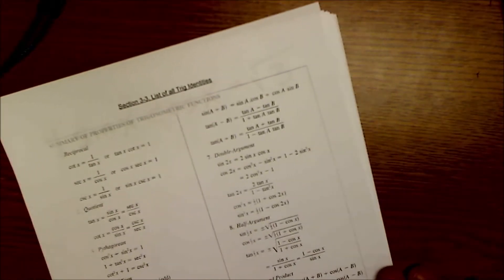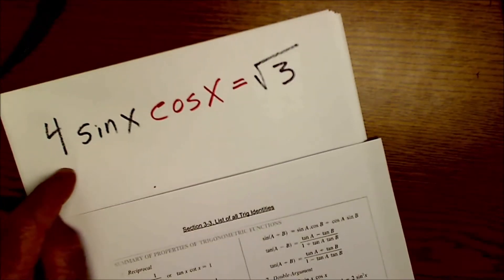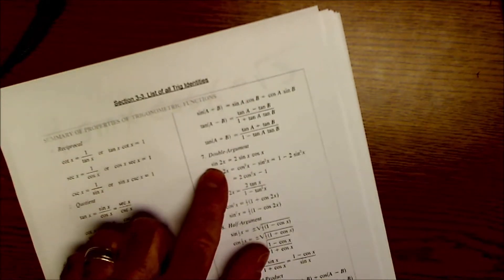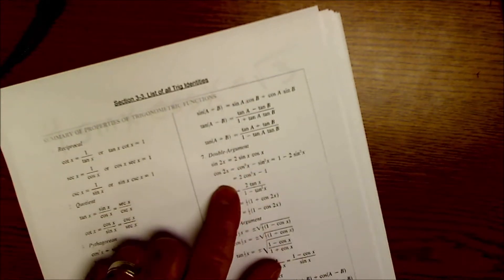So this is a hard problem. We haven't really talked about double angle identities. Here they are right here. Here's your double argument identities.